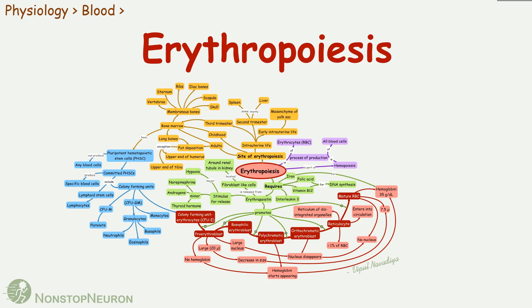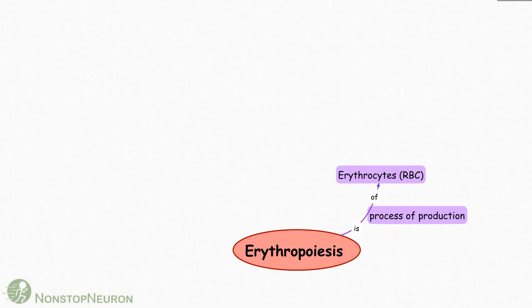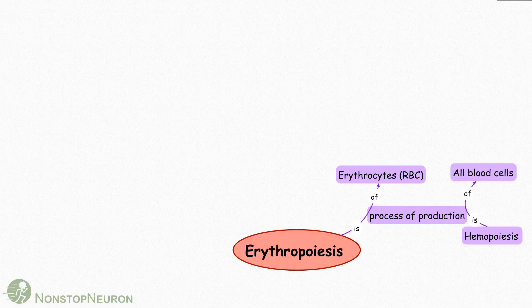Hey guys, in this video we will make a concept map of erythropoiesis. Erythropoiesis is the process of formation of erythrocytes or red blood cells. Another similar term is hemopoiesis, which refers to the process of formation of all blood cells. So we can say erythropoiesis is part of hemopoiesis.